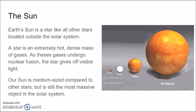Our Sun is a star, like other stars located outside our solar system. You can go outside at night and see hundreds of thousands of stars — they're all similar to our Sun. A star is an extremely hot, dense mass of gases. As these gases undergo nuclear fusion, the star gives off visible light. Our Sun is like a giant ball of gas undergoing nuclear fusion — that's what gives it its light and its heat.